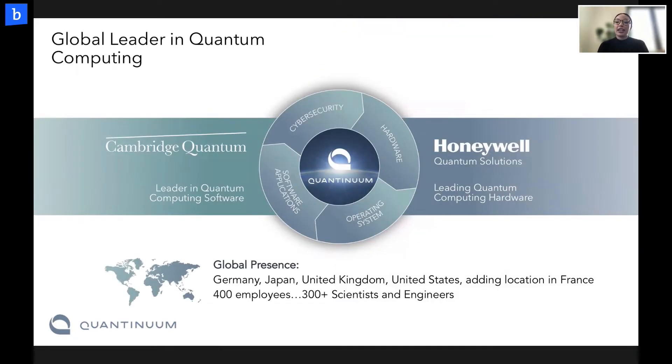So as some context, at the end of last year, Cambridge Quantum merged with Honeywell Quantum Solutions to form Quantinuum. And the aim here was to bring together some of the most powerful quantum computing software expertise with Honeywell Quantum Solutions hardware expertise to become a global full-stack quantum computing company. We have offices all over the world, including in Munich, London and Cambridge, the United States, Japan, and we're opening one in France as well. And science is at the forefront of what we do, with the vast majority of our company working as research scientists and engineers, working across hardware and software applications in cyber, machine learning, quantum Monte Carlo, and also chemistry, which is what I'm going to be speaking about today.